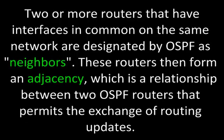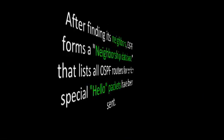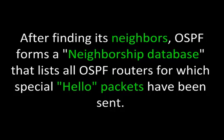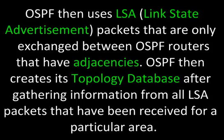Two or more routers that have interfaces in common on the same network are designated by OSPF as neighbors. These routers then form an adjacency, which is a relationship between two OSPF routers that permits the exchange of routing updates. After finding its neighbors, OSPF forms a neighborship database that lists all OSPF routers for which special hello packets have been sent. OSPF then uses LSA or link state advertisement packets that are only exchanged between OSPF routers that have adjacencies, and creates its topology database after gathering information from all LSA packets received for a particular area.